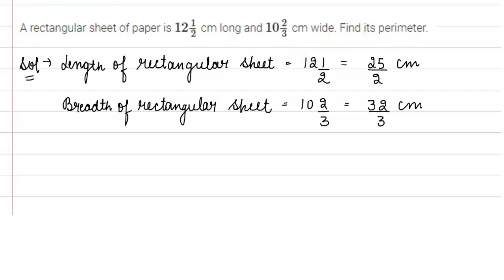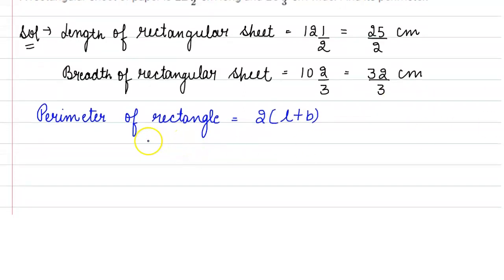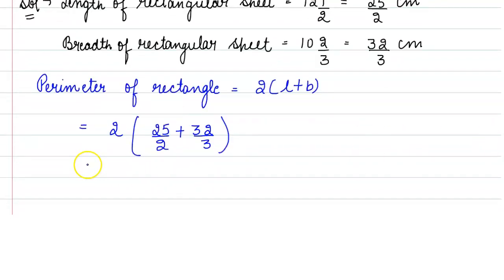Now we need to find the perimeter. The formula for perimeter of a rectangle is: Perimeter = 2(L + B). Just substitute the values of length and breadth: 2(25/2 + 32/3). Now let us solve this. First, we will solve the bracket. In the bracket we have 25/2 + 32/3.